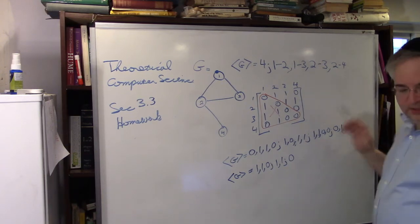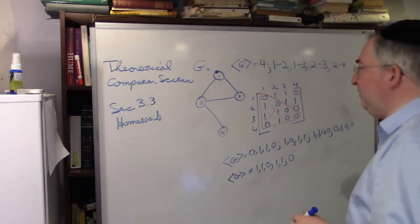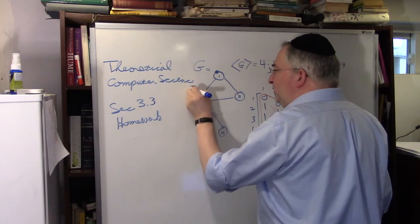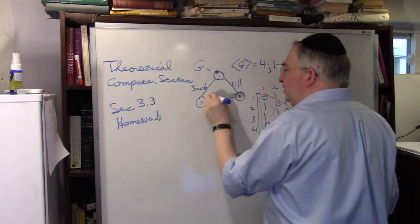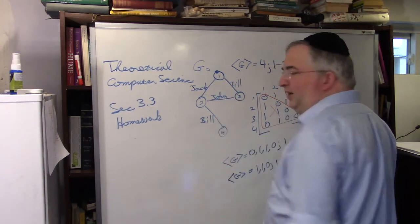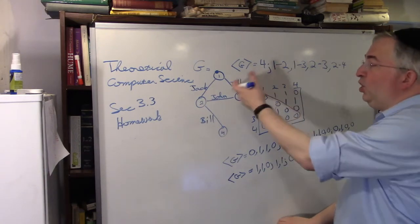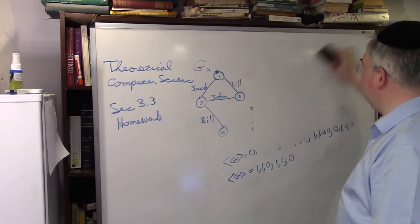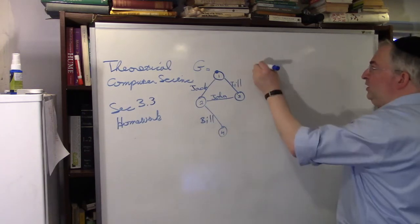Let's do problem number two. Give a nice way to encode a labeled graph. A labeled graph is a graph where there's names over here. So we can put in names: Jack, Jill, John, Bill. They have names. How would we encode such a graph?